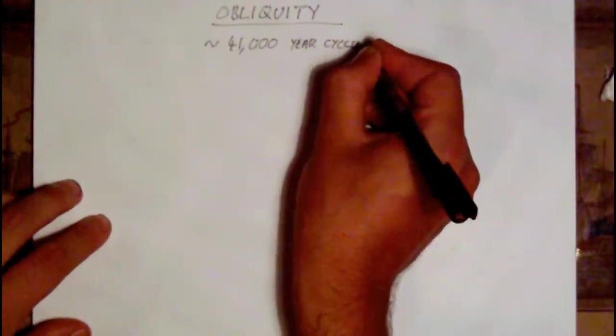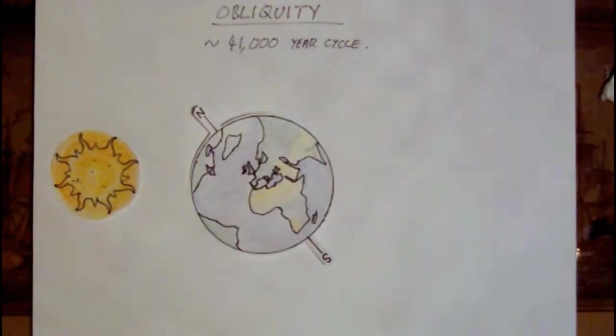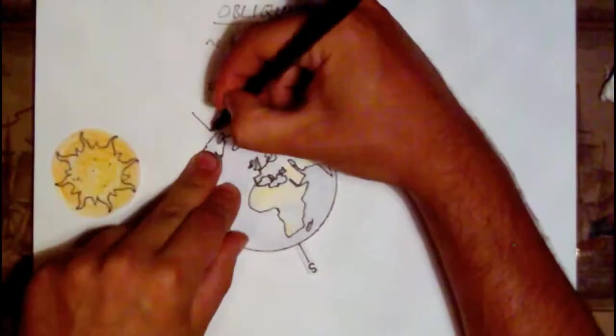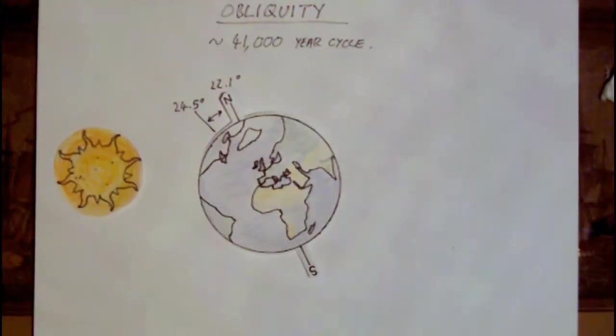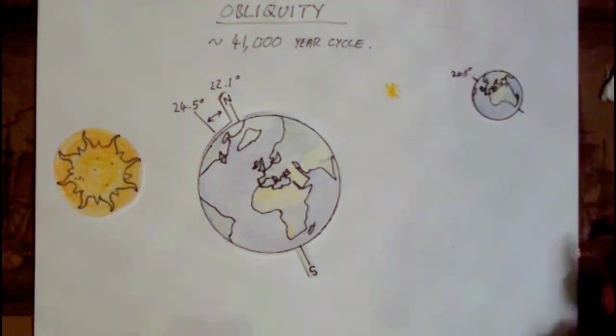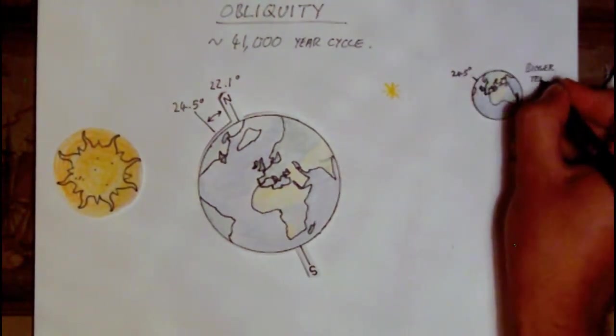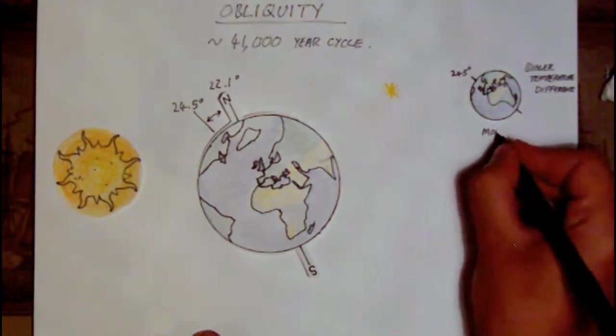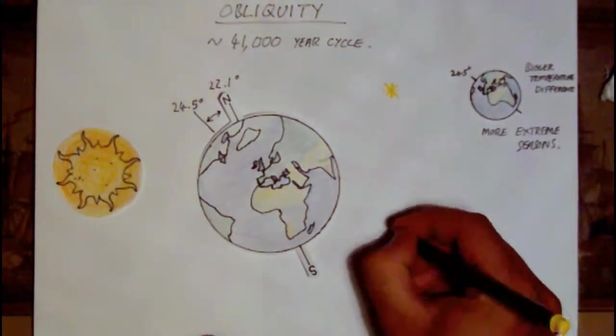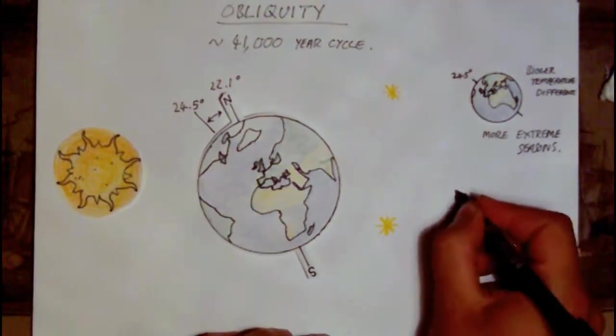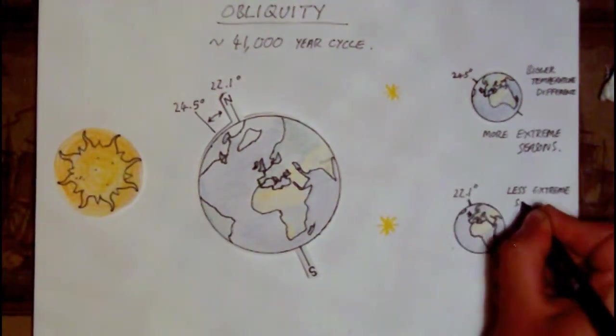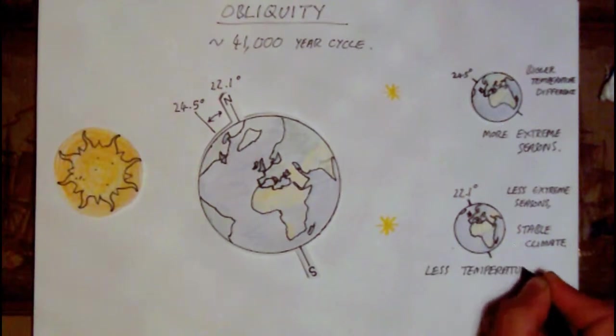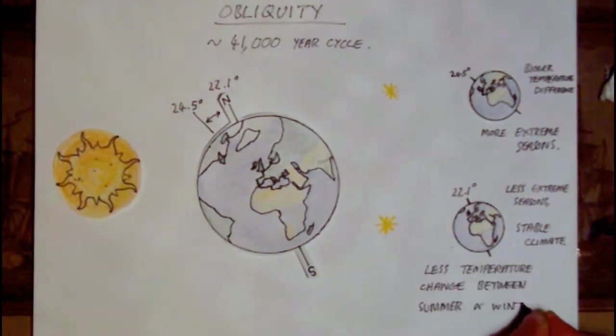Obliquity controls the Earth's tilt towards the Sun and lasts for approximately 41,000 years. The Earth's tilt varies from between 22.1 degrees and 24.5 degrees. When obliquity is high and the Earth is tilted further from the vertical, the seasons become more pronounced and extreme, while a lower obliquity results in a more stable climate.